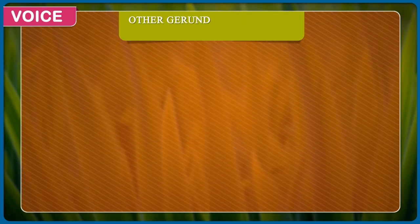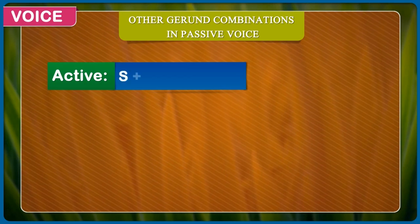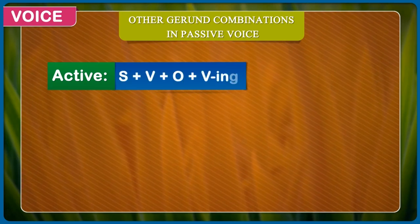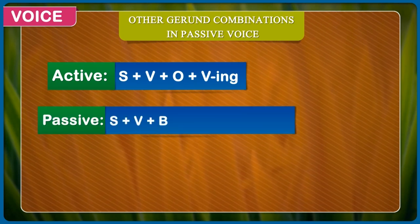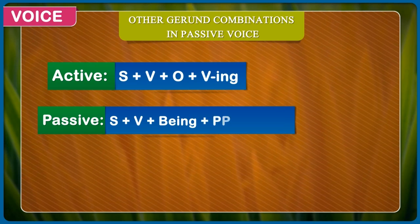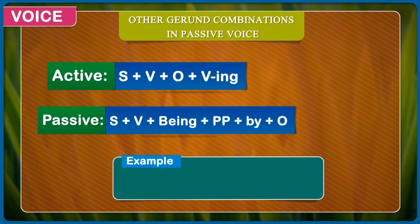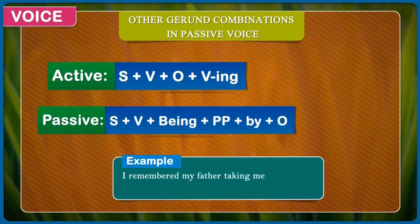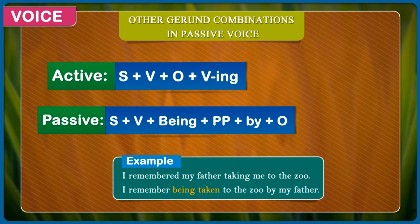Other gerund combinations in passive voice. Active: subject + verb + object + verb with -ing. Passive: subject + verb + being + past participle + by + object. Example: I remembered my father taking me to the zoo. I remember being taken to the zoo by my father.